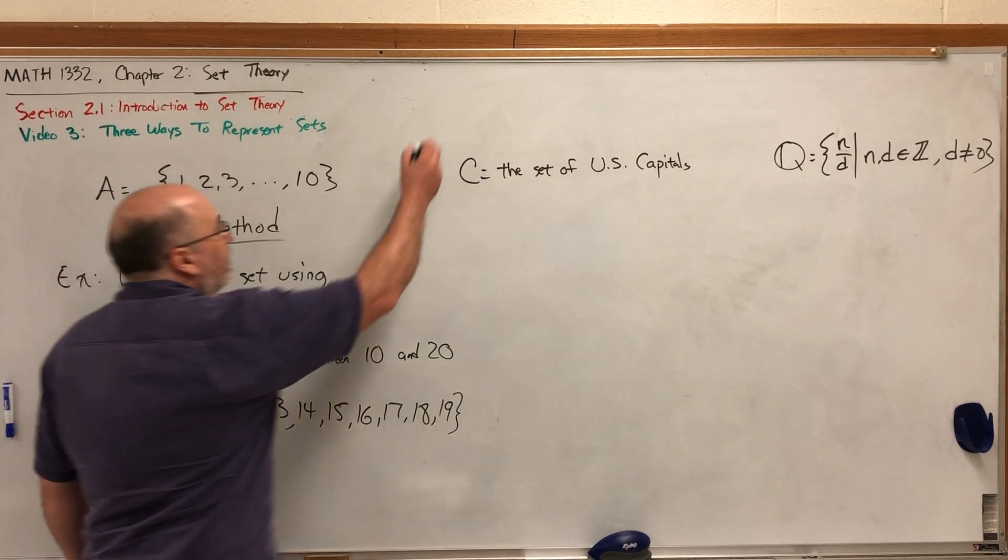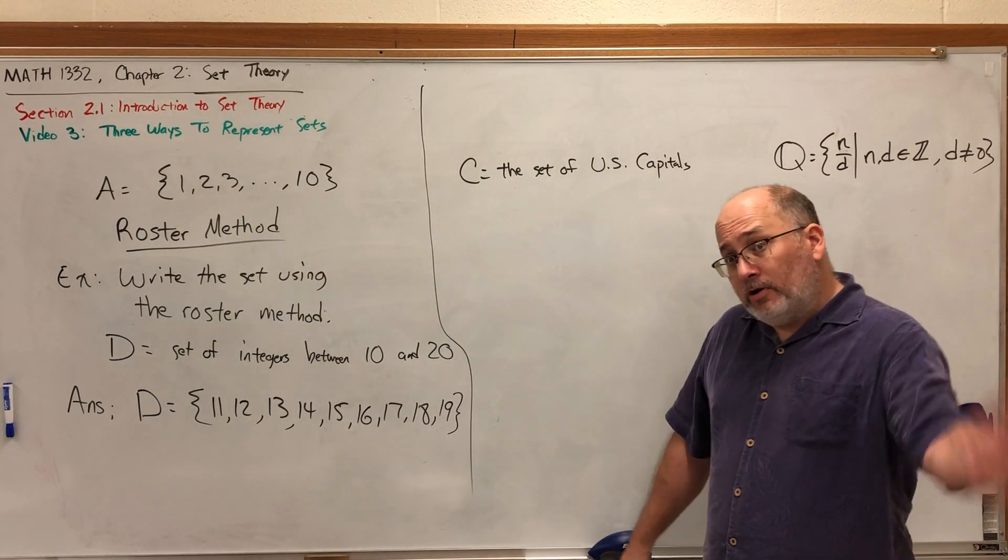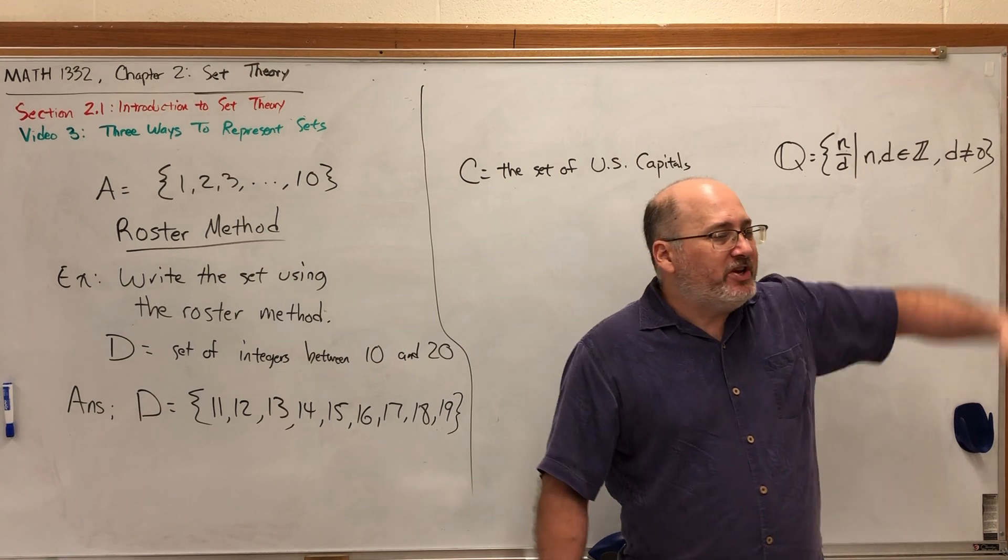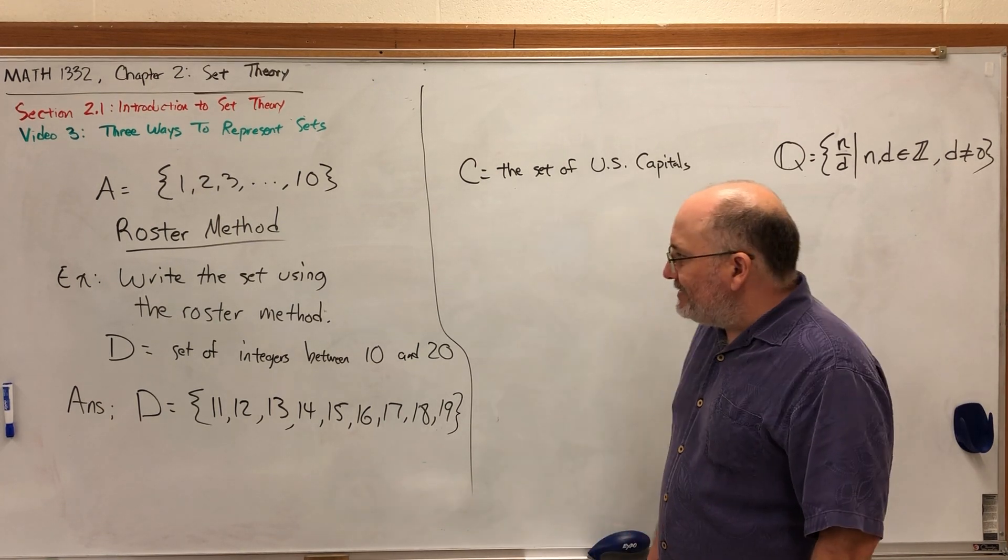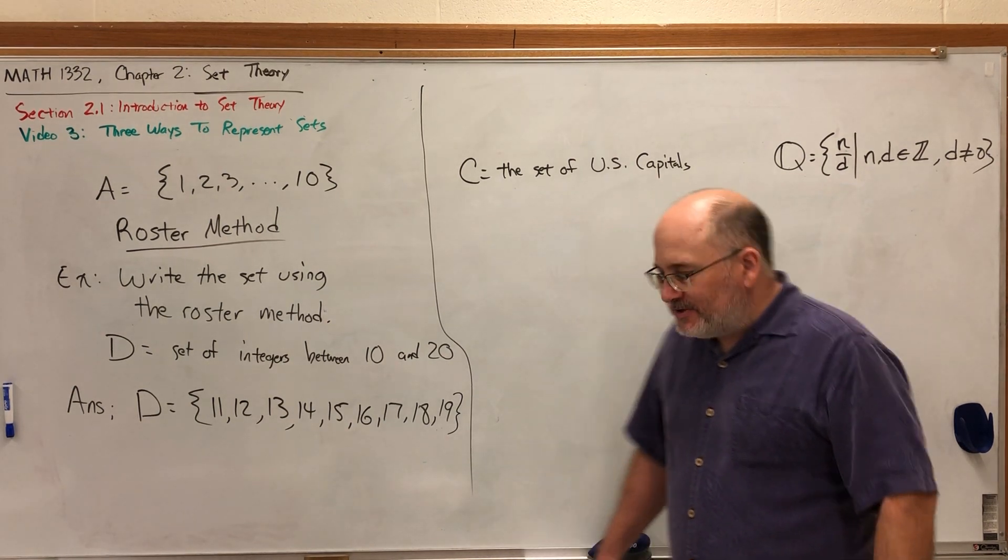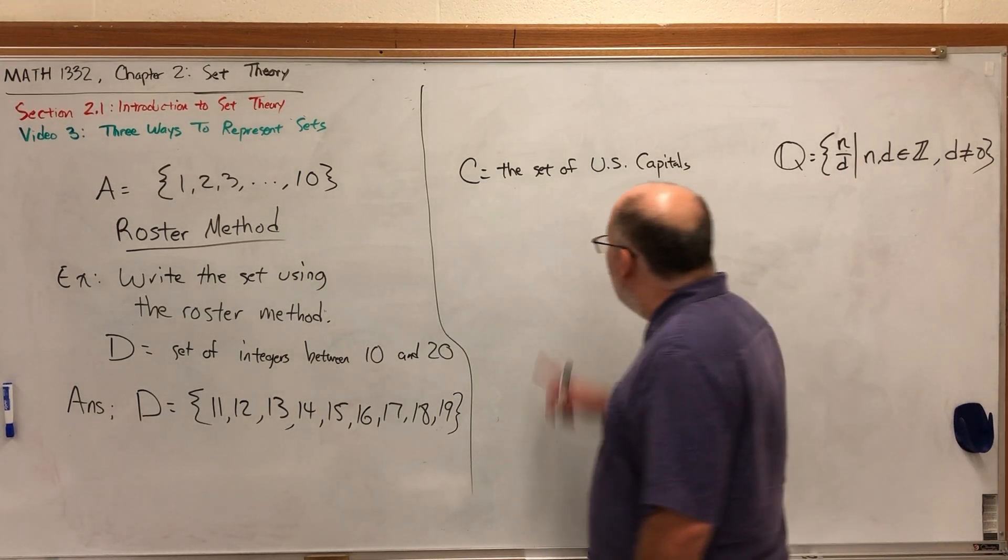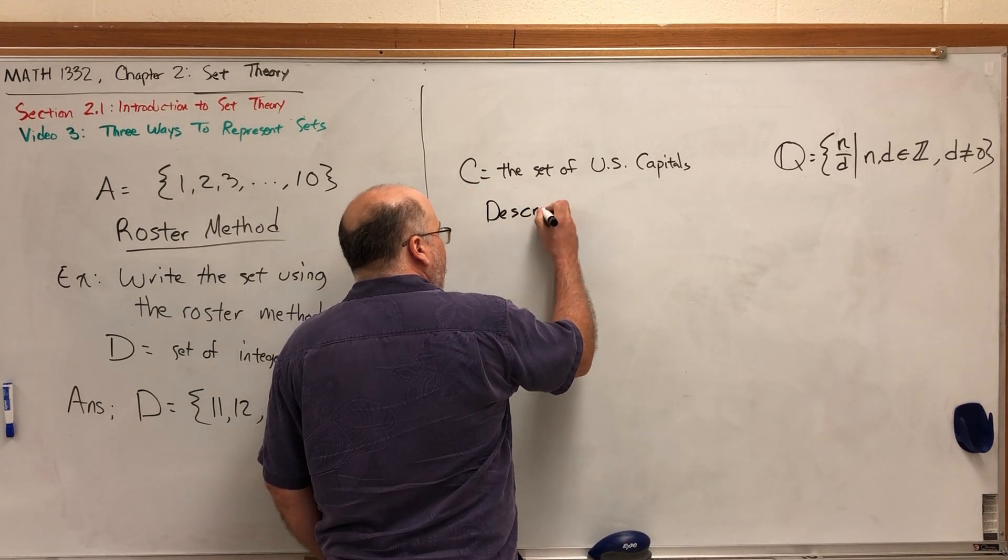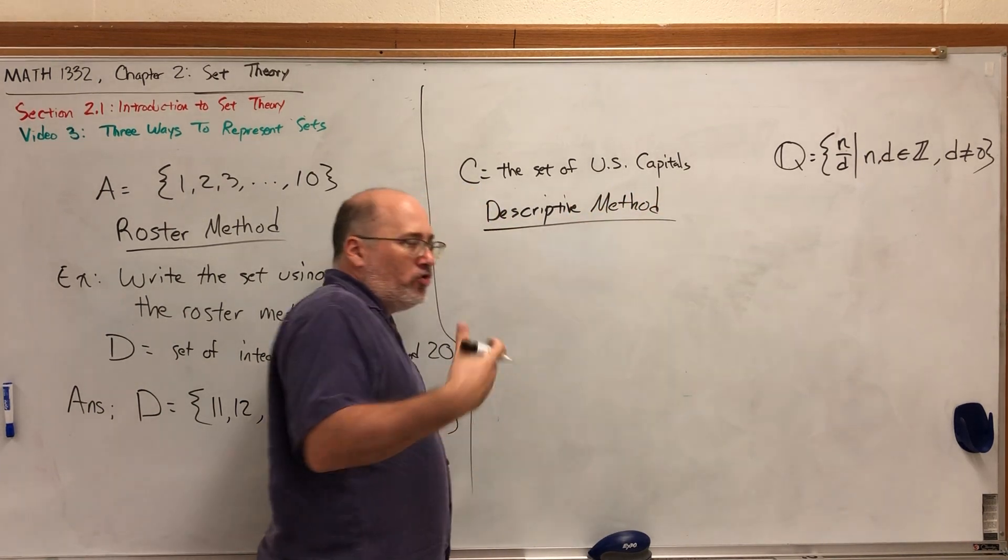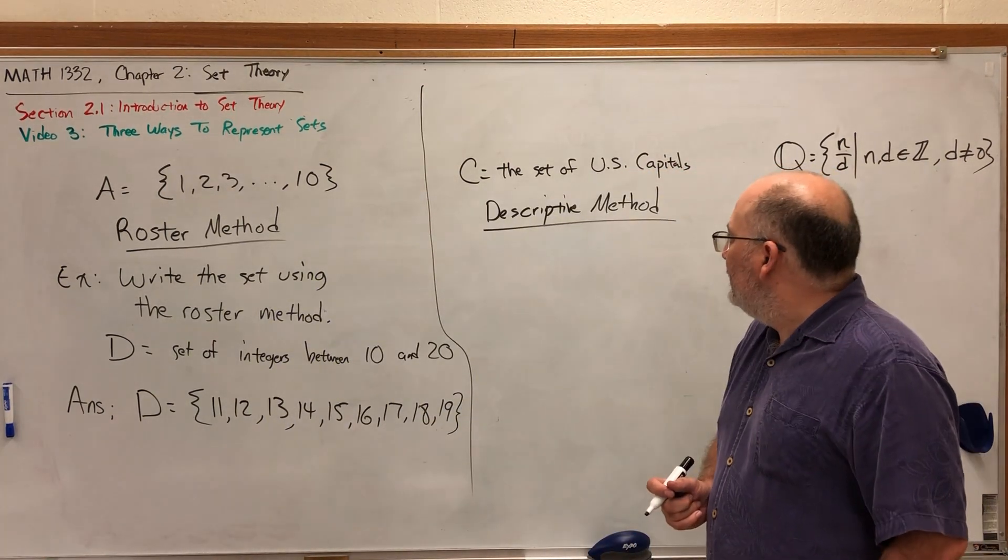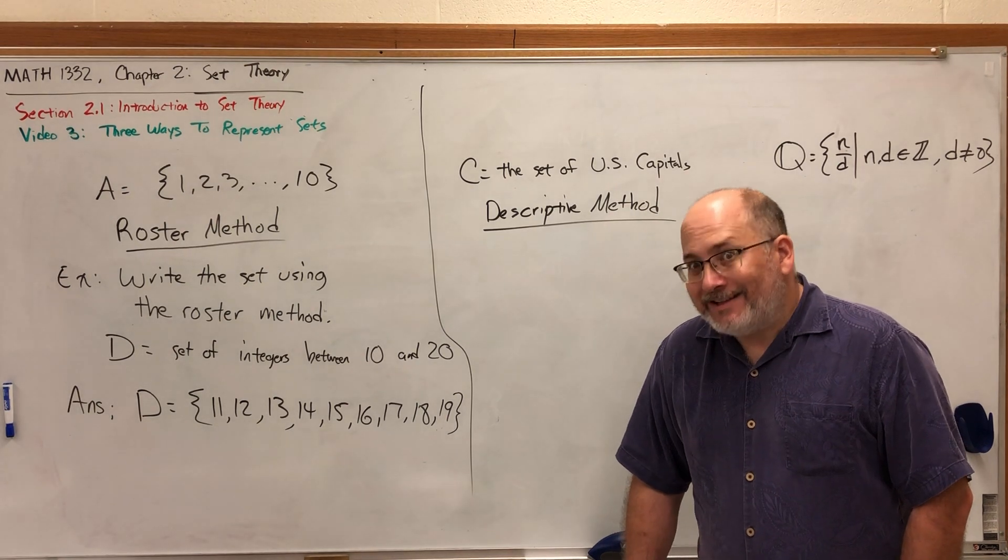The second set C, the set of US capitals, is not in roster form. Could we put it in roster form? Sure. Open up a set, start writing all 50 state capitals, and I don't think I could use ellipses because there's no clear-cut pattern. I guess we could arrange them alphabetically, but it's not immediately clear what would come next if we just put some ellipses. So if I were to write the set of US capitals in roster method, I would actually list out all 50 of them. However, this is what's called the descriptive method, and as its name implies, the descriptive method describes the elements of a set. Just make sure that it's a well-defined set of US capitals. That is well defined. Set of nice places to live? That's not well defined.